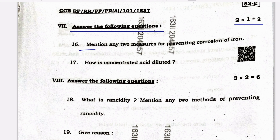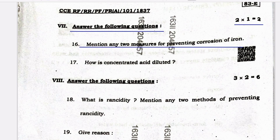Next main — answer the following questions; these are one-mark questions. Question 16: mention any two measures for preventing corrosion of iron. The two measures are: one is galvanization, and another one is painting. Question 17: how is concentrated acid diluted? By adding acid to water, the OH⁻ ion concentration is decreased.